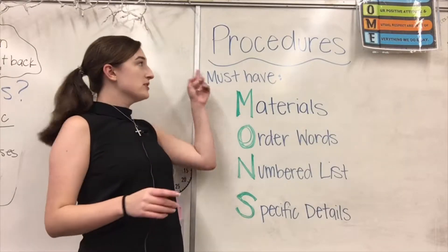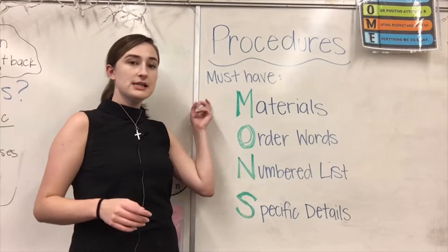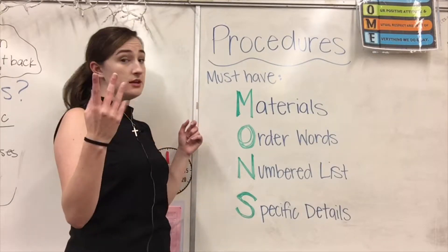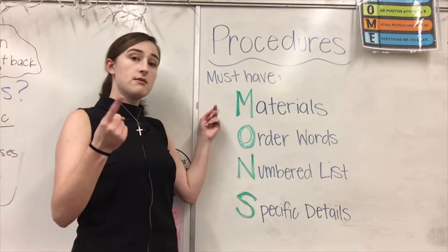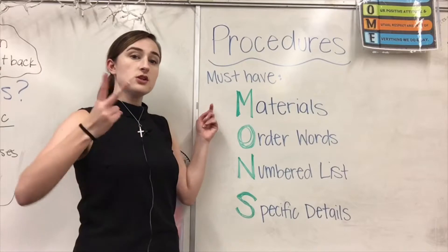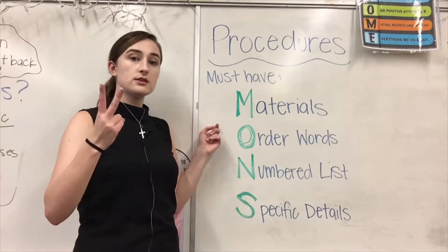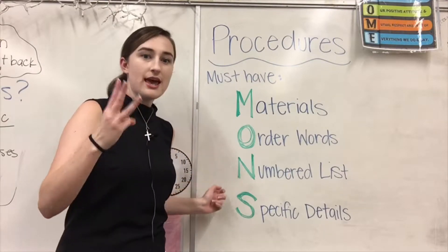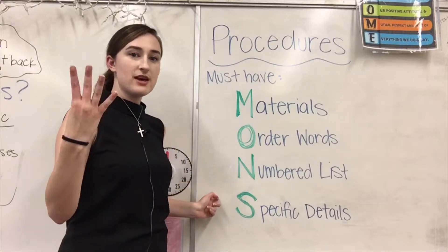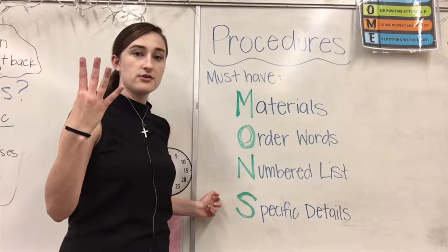So a procedure must have four things: one, materials; two, order words; three, a numbered list; and four, specific details.